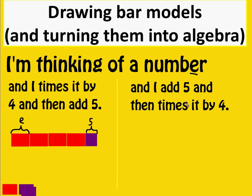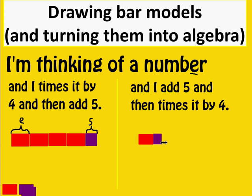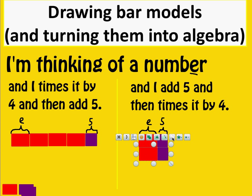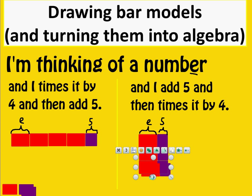The second version: I add 5 first and then times it by 4. I take the number I'm thinking of and add 5 to get E plus 5. But then it says times it by 4 — and that means times the whole thing by 4. So I draw it repeated down the page to show that it's the whole E plus 5 that's being multiplied by 4.